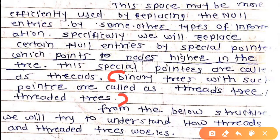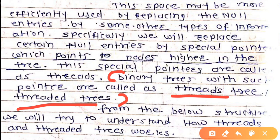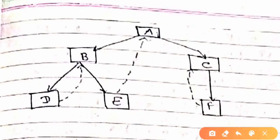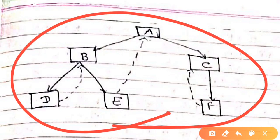Binary trees with such special pointers are called threaded trees. The pointers themselves are called threads. The null entries are replaced by pointers to higher nodes in the tree. From the below structure, we will try to understand how threads work and how threaded trees look.